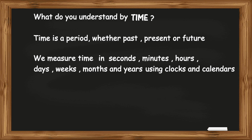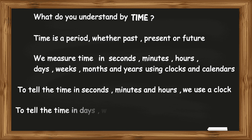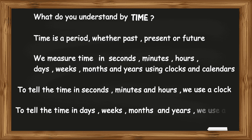To measure time or to tell the time in seconds, minutes and hours, we use a clock. And to tell the time in days, weeks, months and years, we use a calendar.